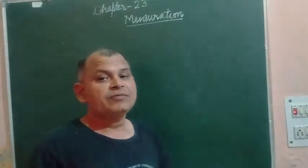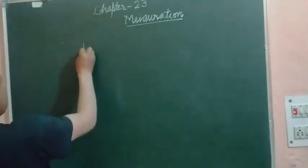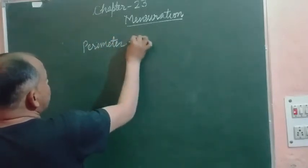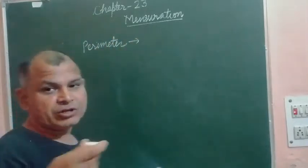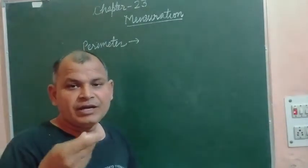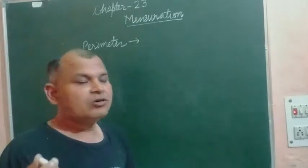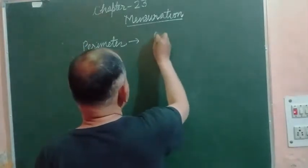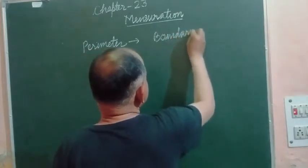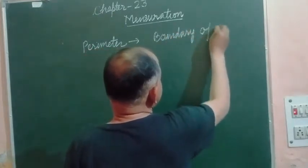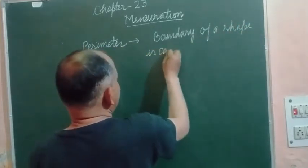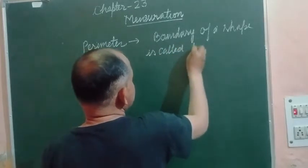first we discuss perimeter. So what is perimeter? The perimeter of a polygon is the boundary of the polygon or of a shape. If we go around the boundary of a shape, we get the perimeter. So the boundary of a shape is called perimeter.